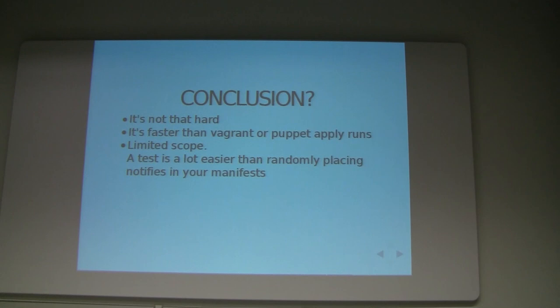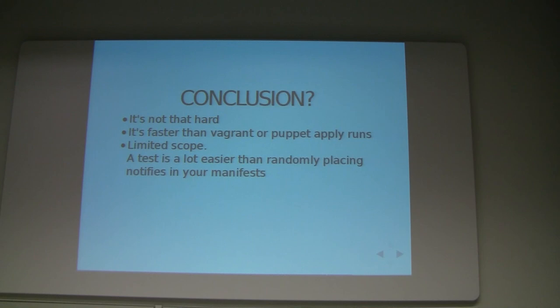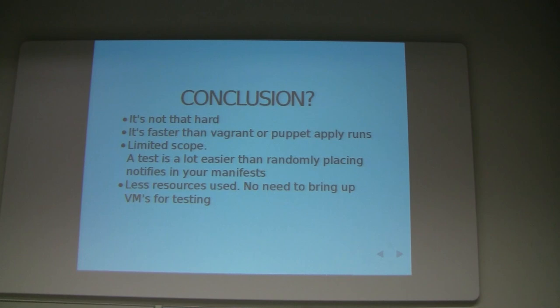If you do a Vagrant up, you know something is broken, you can start looking through your Puppet output and try to determine the cause. But using tests will narrow it down pretty much to the very line or function you're trying to use. And we use a lot less resources — there's no need for Vagrant. All I need is my machine and Ruby gems, and we're good to go.